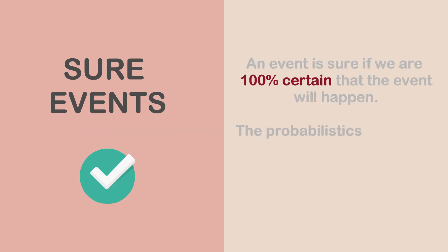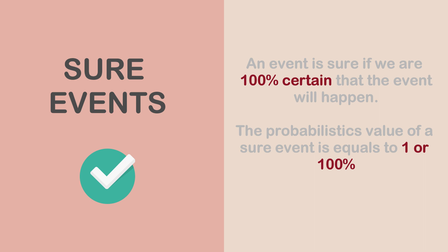Contrary to the concept of the impossible event, we have the sure event. An event is said to be a sure event if the probabilistic value is actually equal to one — one hundred percent. That is, we are definitely certain that this event of ours is actually going to occur.